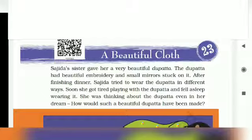Sajda's sister gave her a beautiful dhupatta. The dhupatta had beautiful embroidery and a small mirror stuck on it. After finishing dinner, Sajda tried to wear the dhupatta in different ways. Soon she got tired playing with the dhupatta and fell asleep wearing it. She was thinking about the dhupatta even in her dream — how would such a beautiful dhupatta have been made?